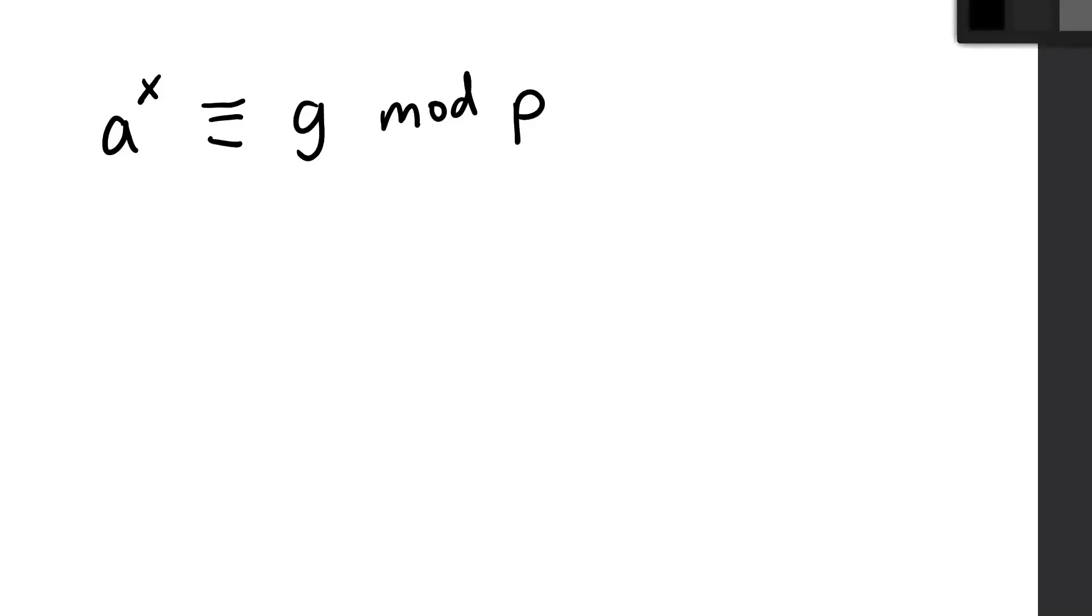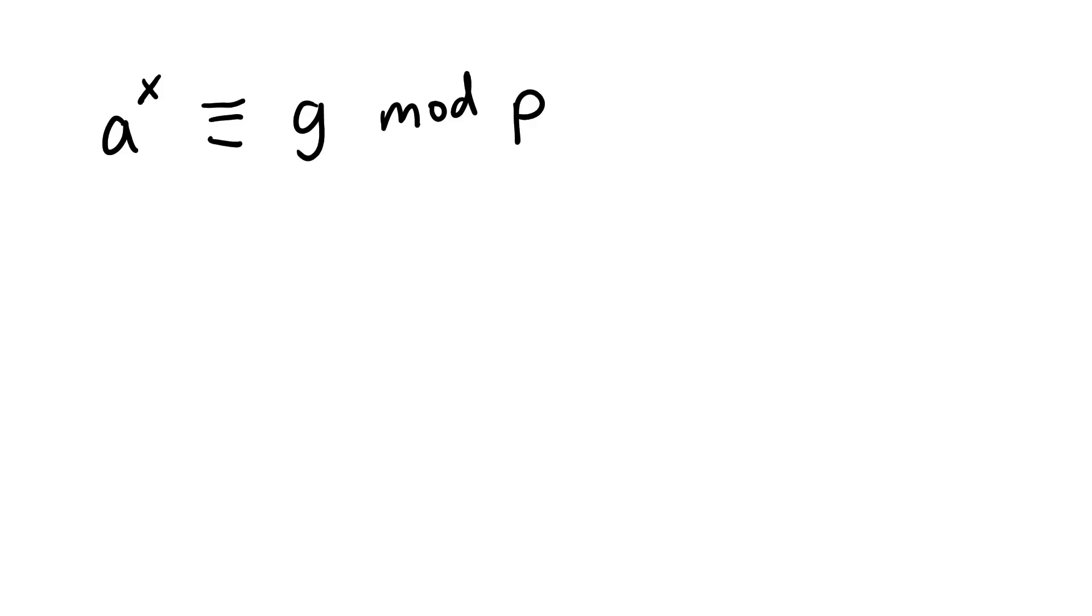I think the best way to demonstrate this is to actually just jump straight into a problem instead of going through every single step. So let me pull up the example really quick. We have 2 to the x is congruent to 7 mod 53. And we want to solve for x.